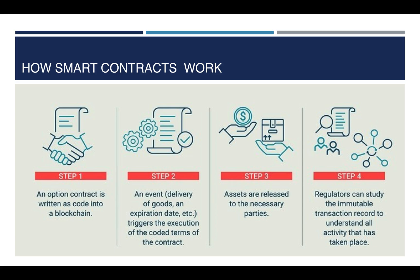Let us understand how a smart contract works in a nutshell. Step 1: the smart contract is written as code and deployed on the blockchain. Step 2: when certain events occur, the smart contract code gets automatically executed. Step 3: this leads to the transfer of assets from one party to another. Step 4: since this transaction, like all transactions, is stored in an immutable data structure — the blockchain — any regulator can verify this transaction.